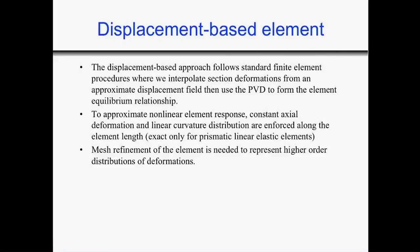To represent the distribution of deformations along the element, we need to discretize our element into many pieces — most commonly referred to as mesh refinement. We need to refine our mesh in order to capture the response or deformation of the structure. For example, the curvature distribution along an element may have a complex shape as the exact solution. If we use only one element with linear curvature, we wouldn't capture that shape, so we need to split or discretize our element into many pieces.